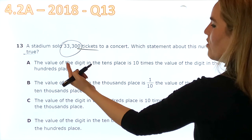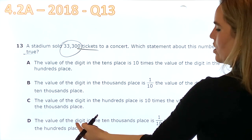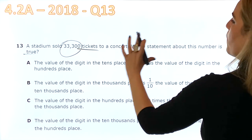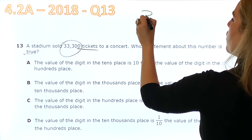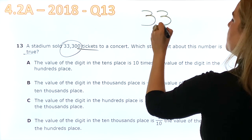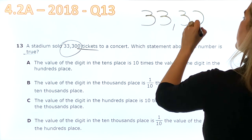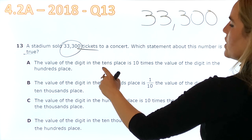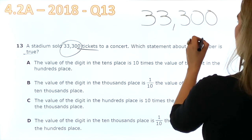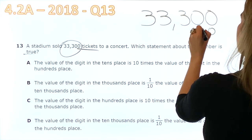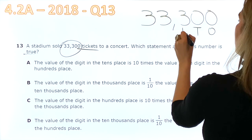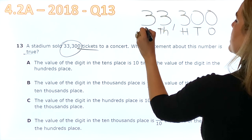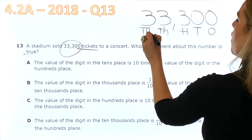And then we have options A, B, C or D. Before we move on, we're going to write the number big, 33,300. It says the value of the digit in the tens place. Okay, I have my ones, tens, hundreds, thousands, and 10,000.